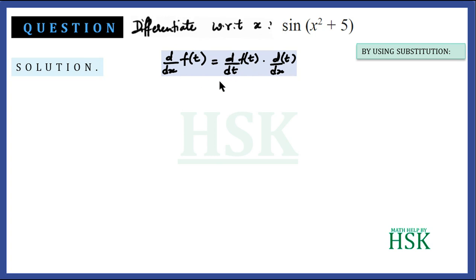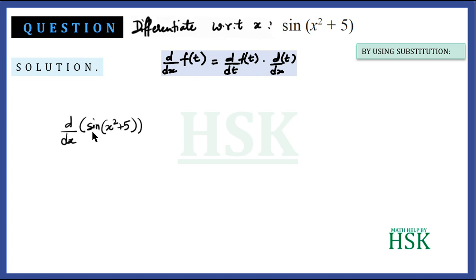Simply see what is written here — as we do the question, everything will become very clear. We have to differentiate sine of (x squared plus 5) with respect to x; that is, we have to calculate d/dx of sine(x² + 5).